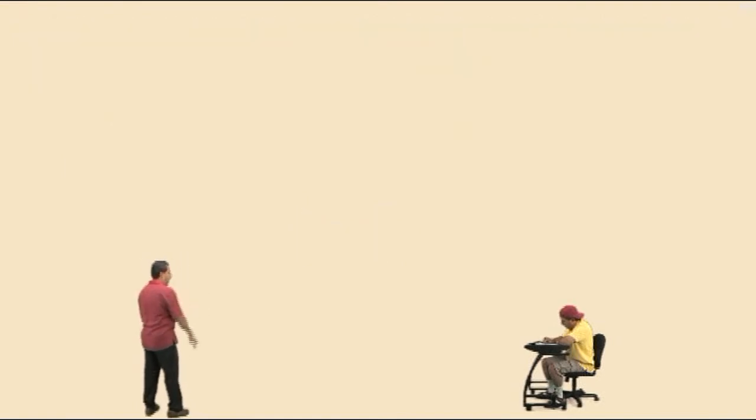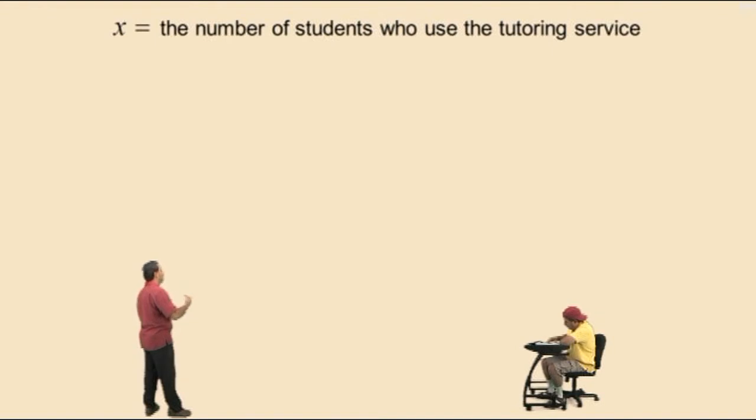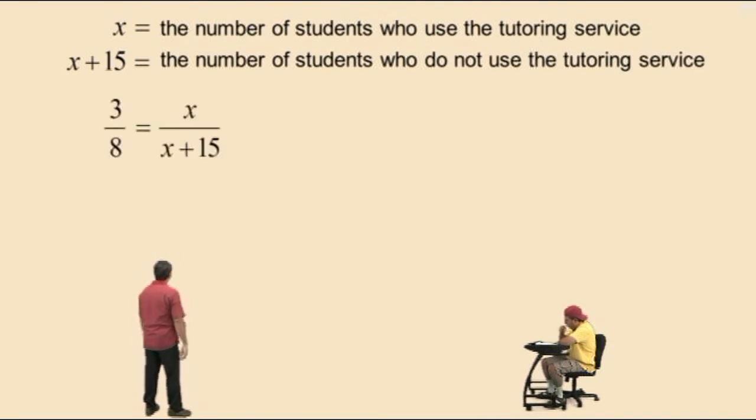Okay, let's move our work over here. Remember, x represents the number of students who use the service. x plus 15 represents the number of students who do not use the service. There's our proportion problem. Now, we can use a technique called cross multiplication to solve our proportion. So here we go, Charlie.